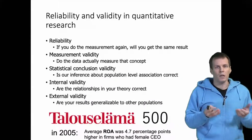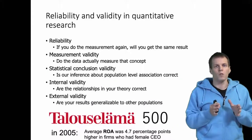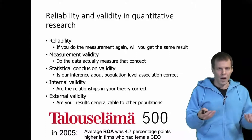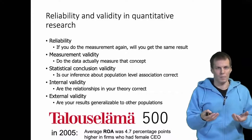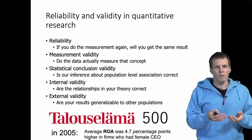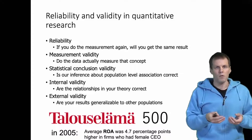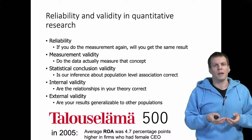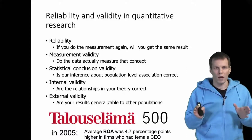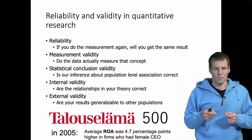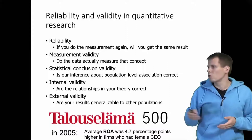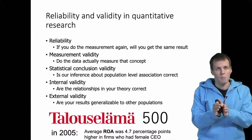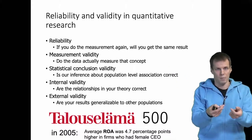Reliability and validity in quantitative research are typically considered through five different kinds of reliabilities or validities. Because quantitative research is done using numbers processed by a computer, there is no unreliability in the actual analysis. So when we focus on reliability, we typically focus on the reliability of measurement — if we measure the same thing again, would we get the same result?